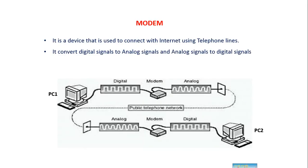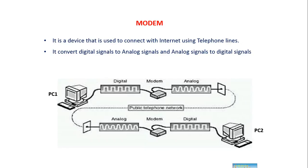A modem is a device that's used to connect to the internet using telephone lines. The main function of the modem is to convert digital signals to analog signals and analog signals back to digital signals. For example, when PC1 sends a file to PC2, the data transmitted to the modem is in digital format. Once it reaches the modem, it's converted to an analog signal and transmitted through telephone links. At the receiver's modem, the analog signal is converted back to a digital signal and presented to PC2.